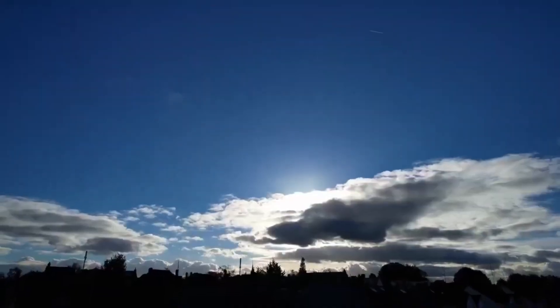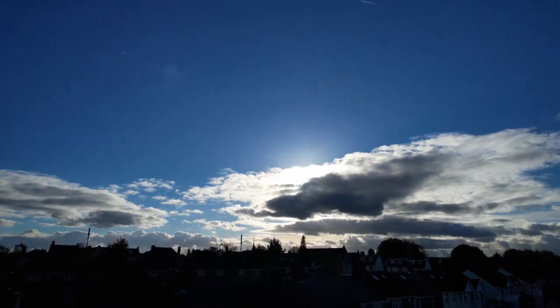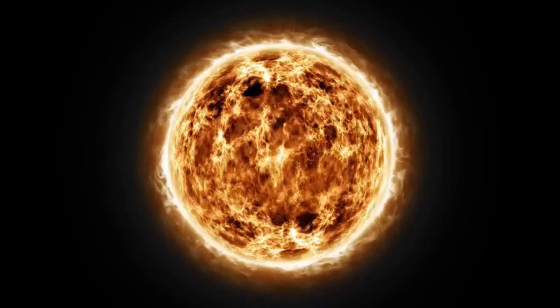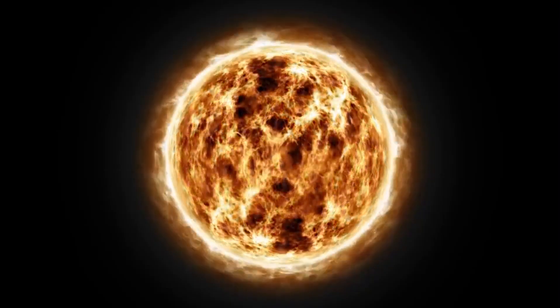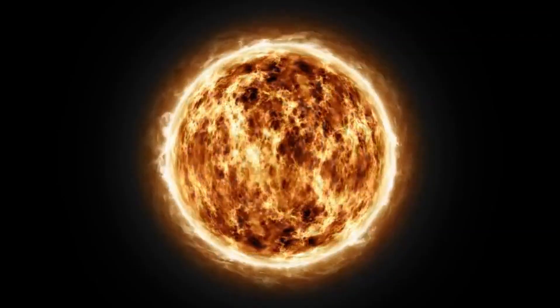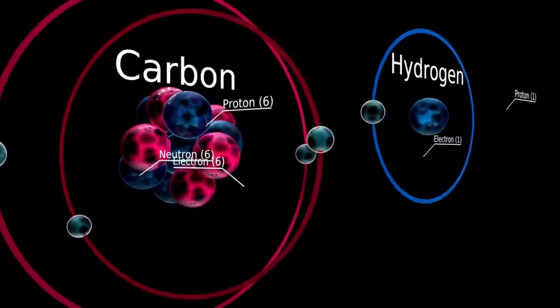This massive star, located approximately 650 light-years from Earth, is a semi-regular variable star, meaning its brightness fluctuates over time. These fluctuations are part of its natural life cycle as a red supergiant, but recent observations have revealed changes that are anything but ordinary.